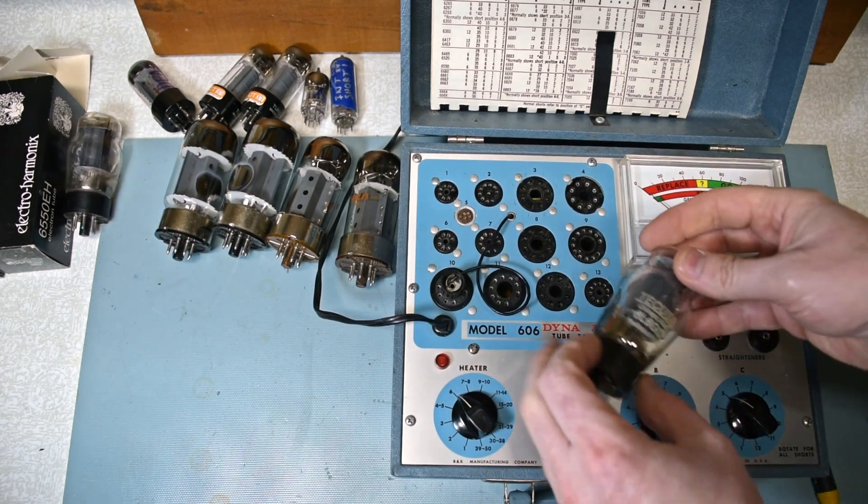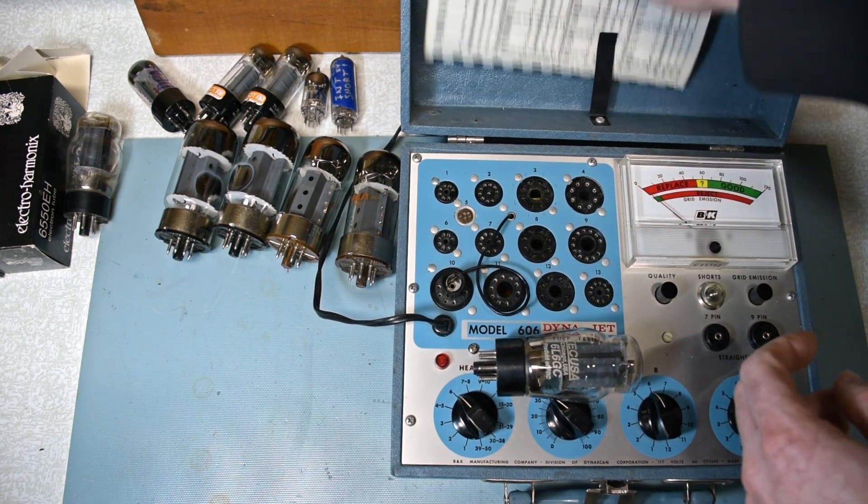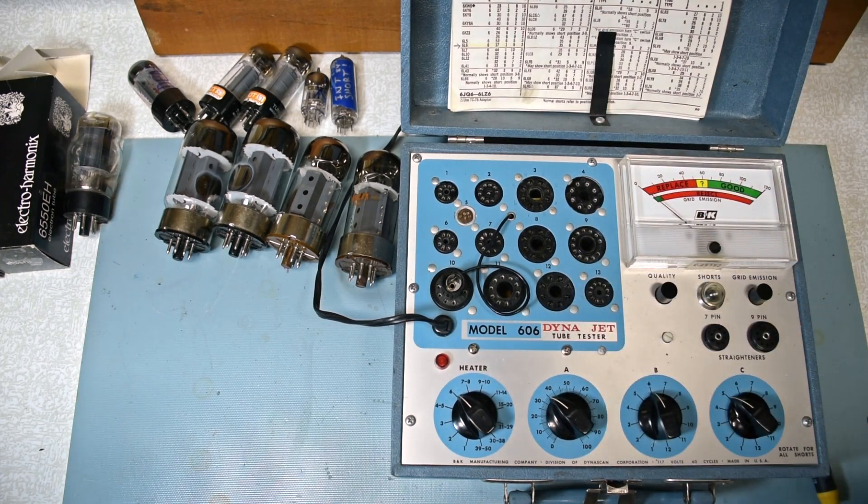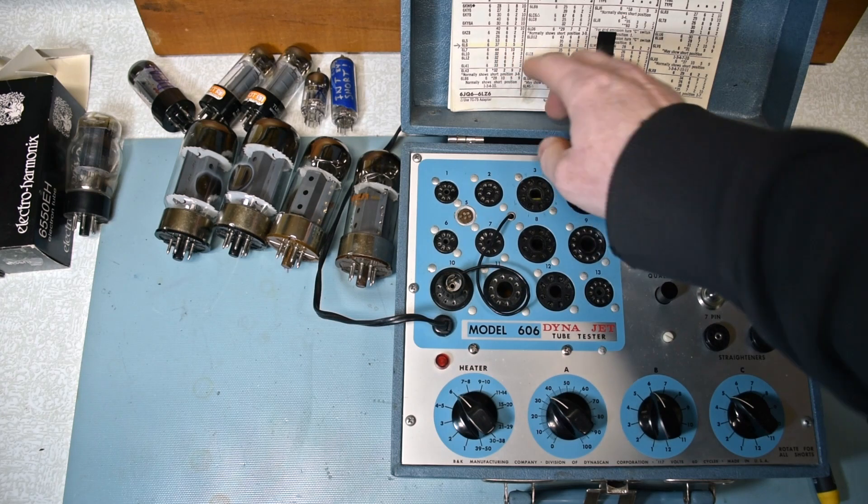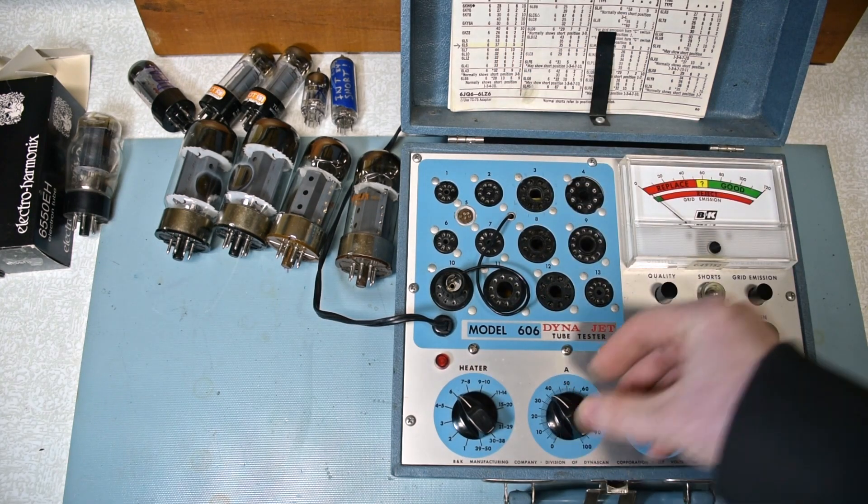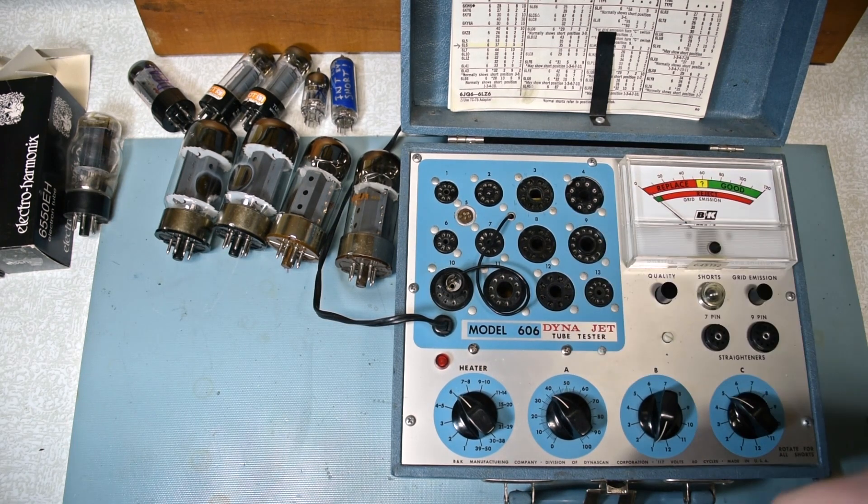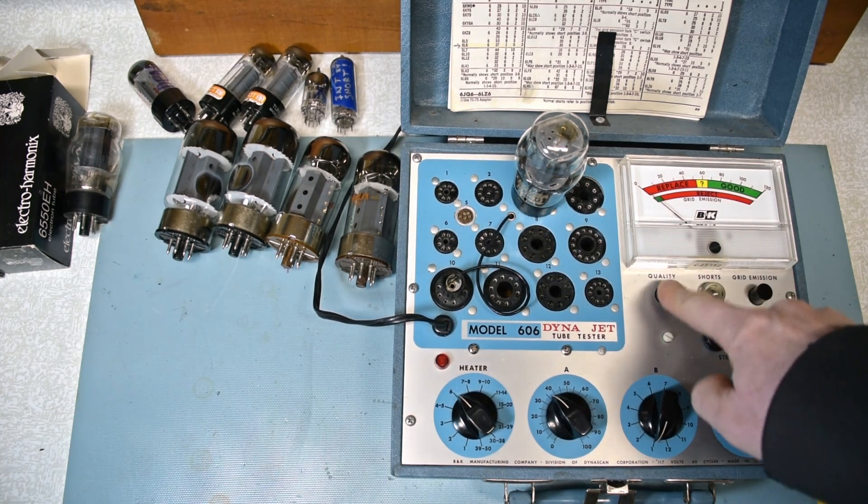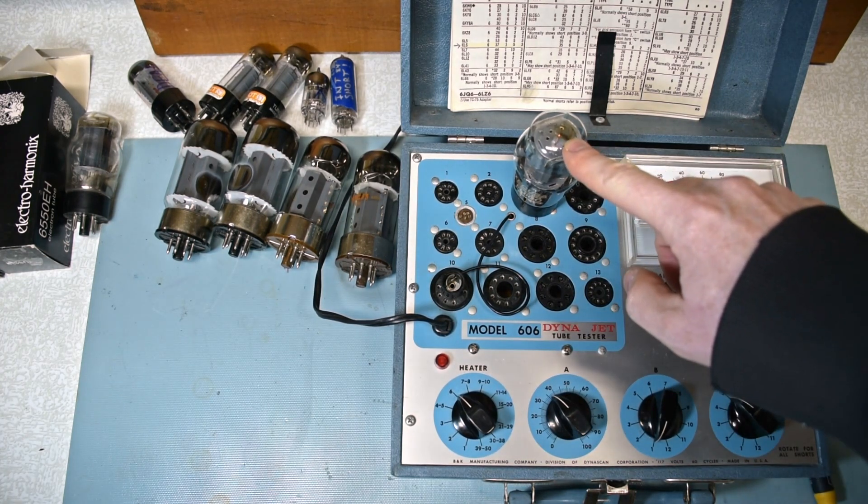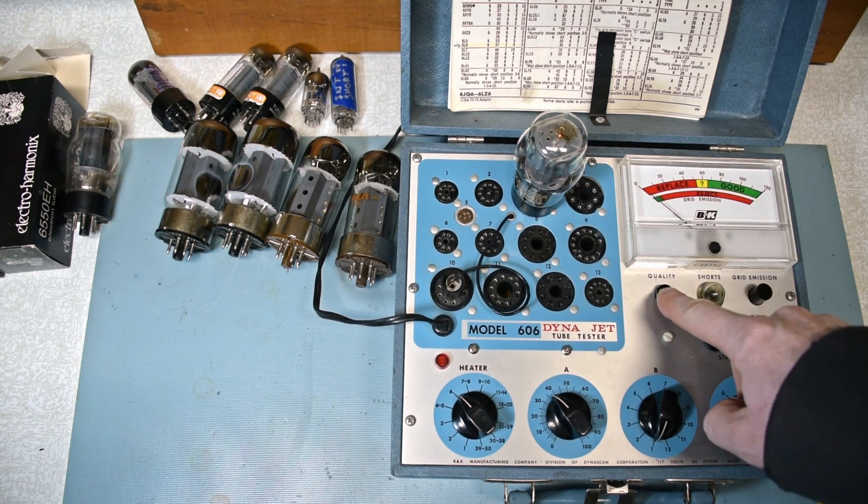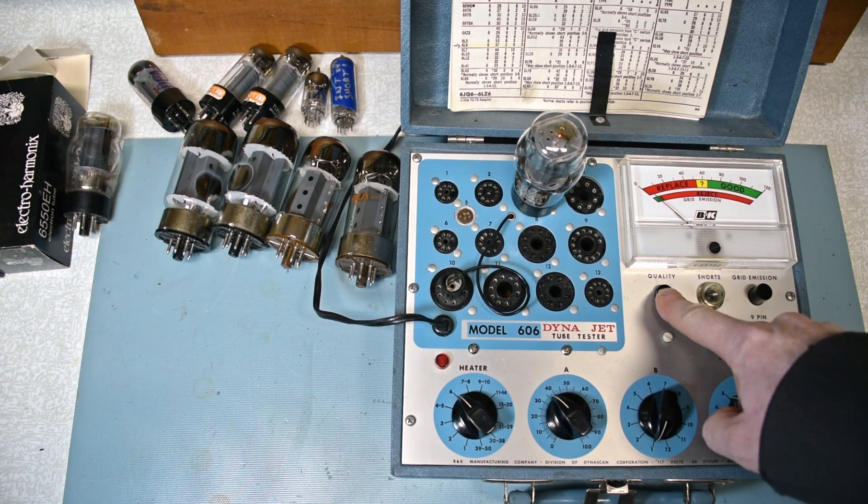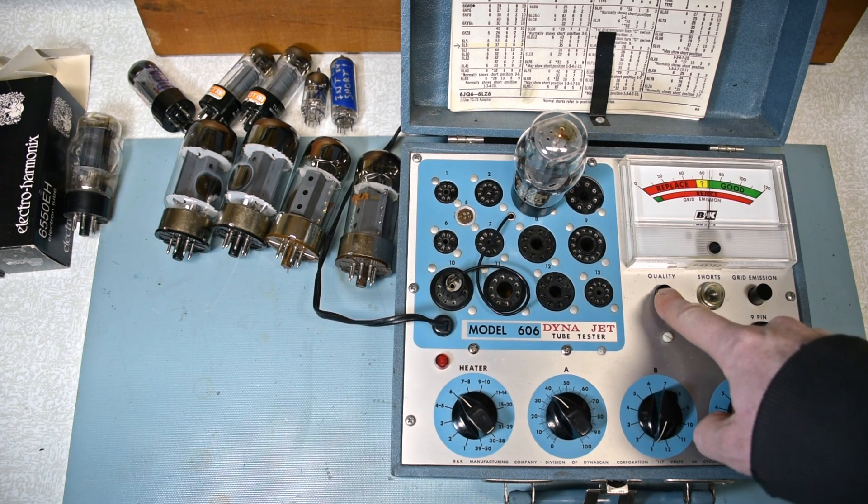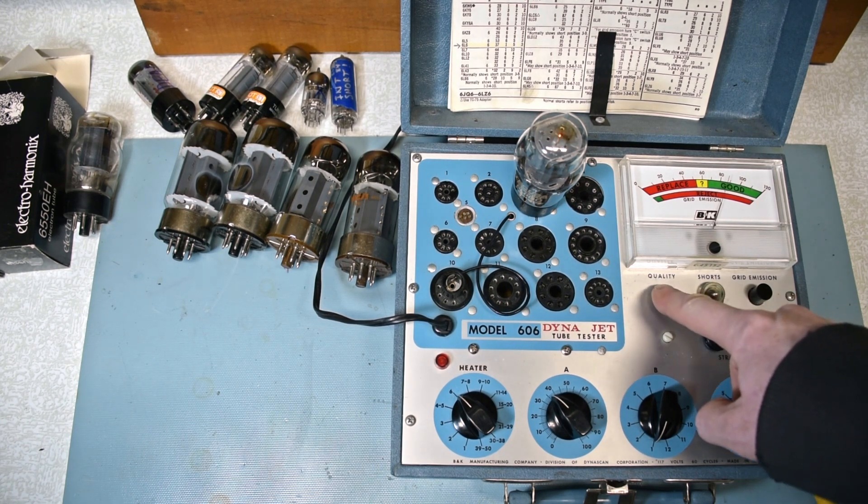Switch to a different type here, 6L6. I've got it highlighted here, it's such a common tube. 637153, socket 3. You can see the filament starting to glow. The needle's moving up and it looks like it's good.